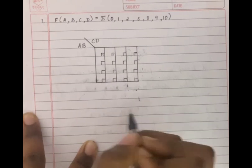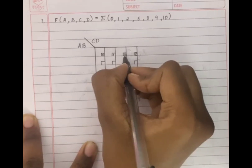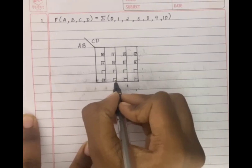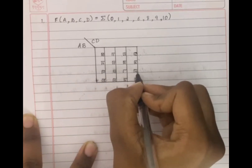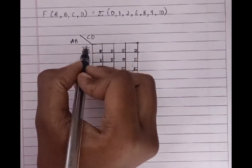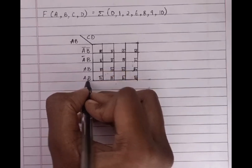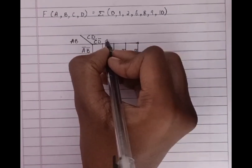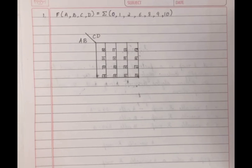Now we're going to number the cells. You have to be careful when numbering them: 0, 1, 2, 3, 4, 5, 6, 7, and 8, 9, 10, 11, 12, 13, 14, 15. After numbering the cells, we write the variables: A'B', A'B, AB, AB' on the rows, and C'D', C'D, CD, CD' on the columns.